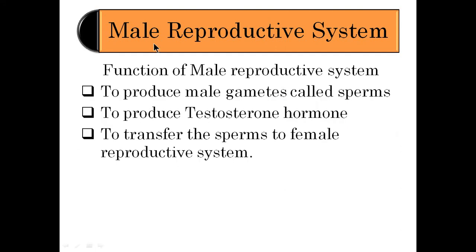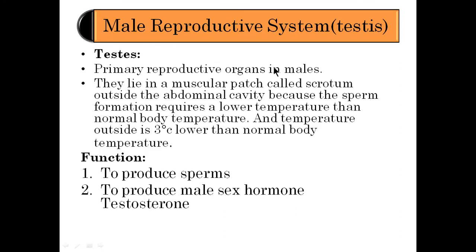The functions of the male reproductive system are: first, to produce sperms; second, to produce testosterone hormone; and third, to transfer sperms to the female reproductive system. One important question often asked is why the scrotum is placed outside the abdominal cavity. The reason is that sperm formation requires a lower temperature than normal body temperature. In the scrotum, the temperature is three degrees lower than the normal body temperature — always remember that.